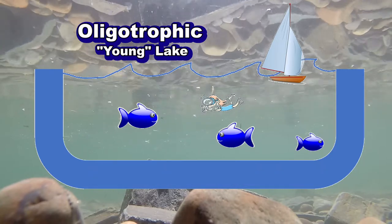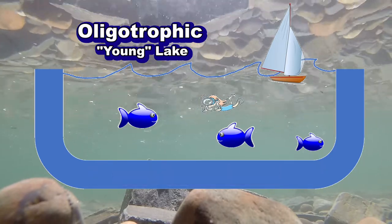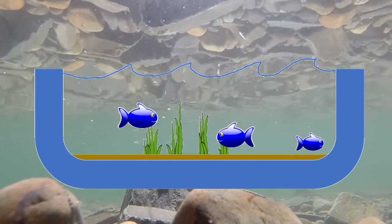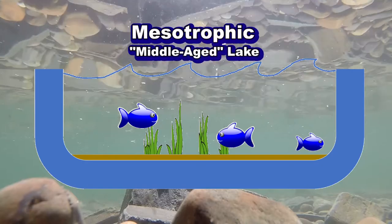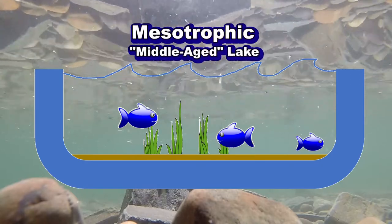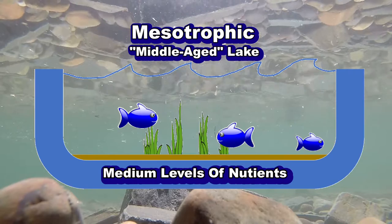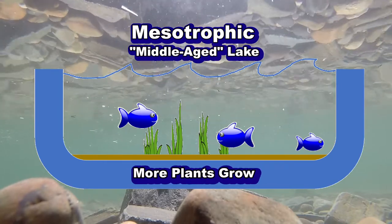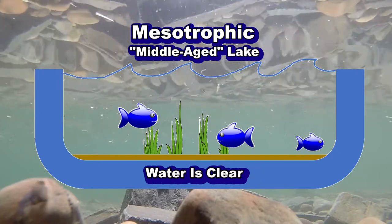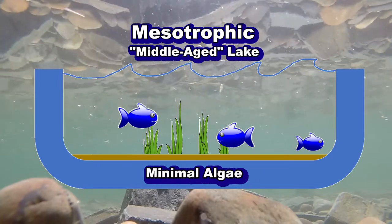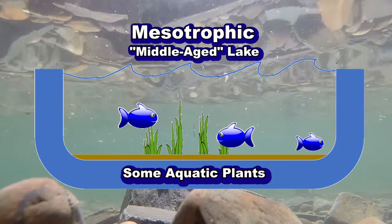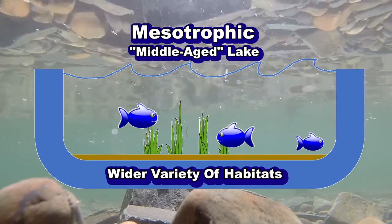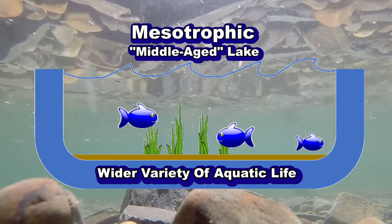These conditions are also usually great for trout fishing, since trout like cold, clean water. As more sediment is washed into the bottom of the lake, it ages into a mesotrophic state, or a middle-aged lake with medium levels of nutrients. There are now more nutrients available in the water, and more plants are able to grow. The water is still relatively clear with minimal algae and some beds of submerged aquatic plants. This creates a wider variety of habitats, and therefore supports a wider variety of aquatic life.